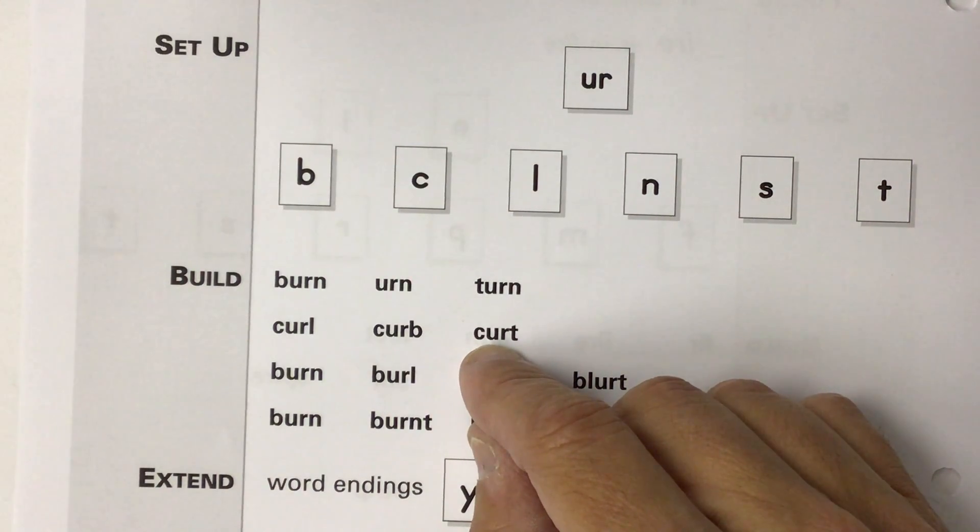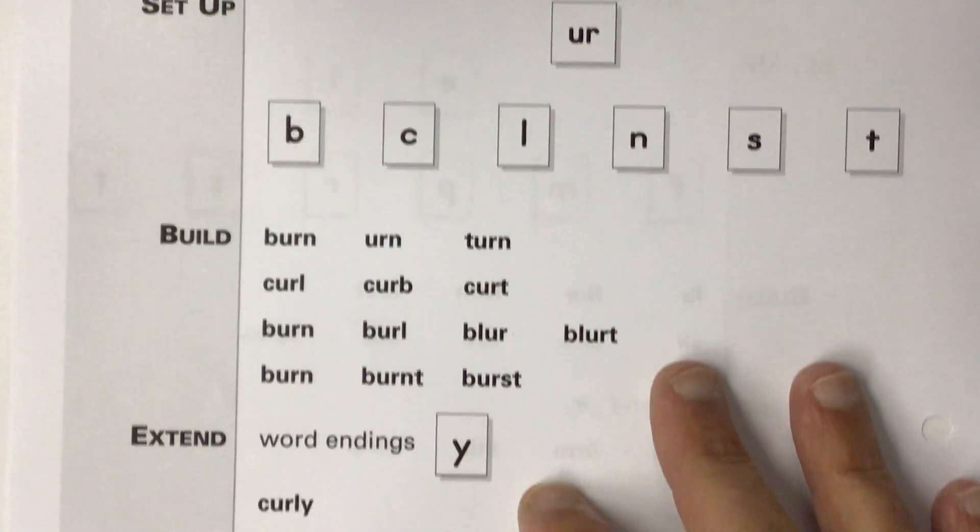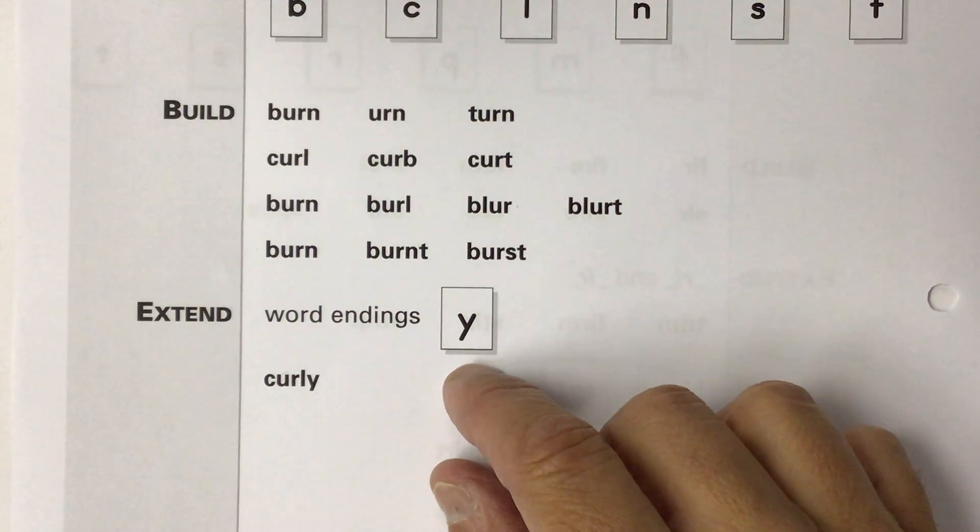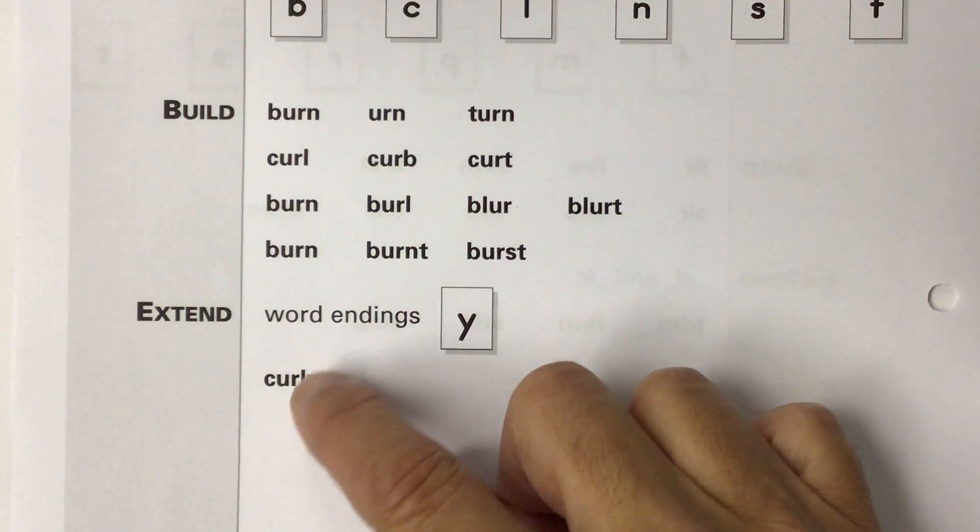This is the word curt. The U-R just says ur. Now you say it. All right? And the other thing you're going to do in this lesson is add the Y to the end of the word curl.